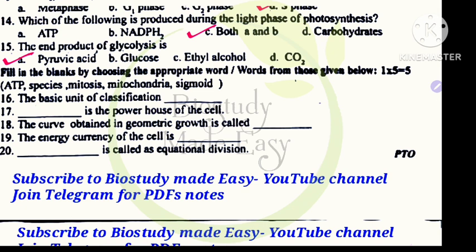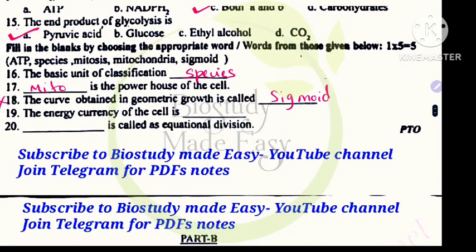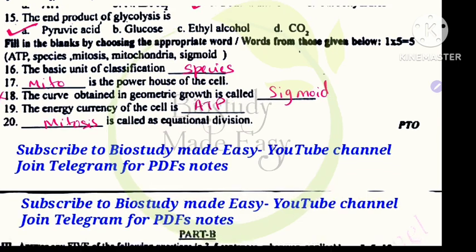Fill in the blanks. Basic unit of classification is species. Mitochondria is the powerhouse of cell. The curve obtained in geometric growth is sigmoid. Actually this is deleted portion. The energy currency of the cell is ATP. Mitosis is called equational division.